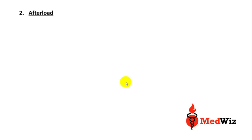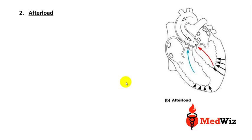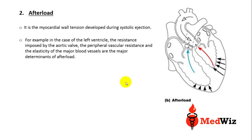The next factor influencing stroke volume is afterload. Afterload — as you can see in the picture — is the myocardial wall tension developed during systolic ejection. While preload refers to myocardial tension at end diastole, afterload is developed during systolic ejection. For the left ventricle, the major determinants of afterload include the resistance imposed by the aortic valve, peripheral vascular resistance, and the elasticity of the major blood vessels.